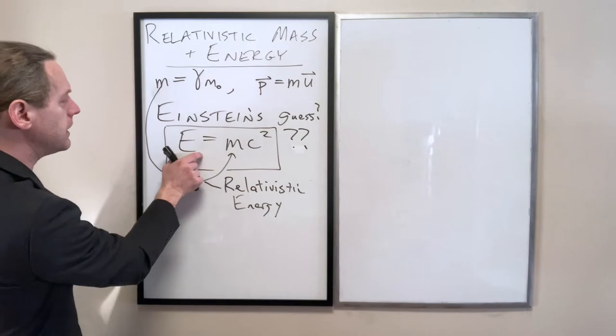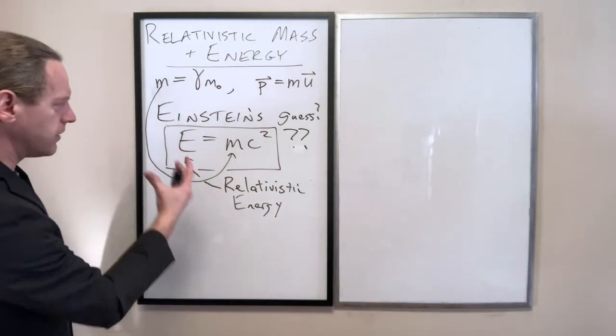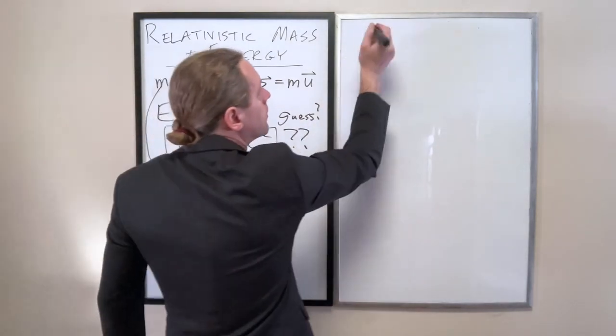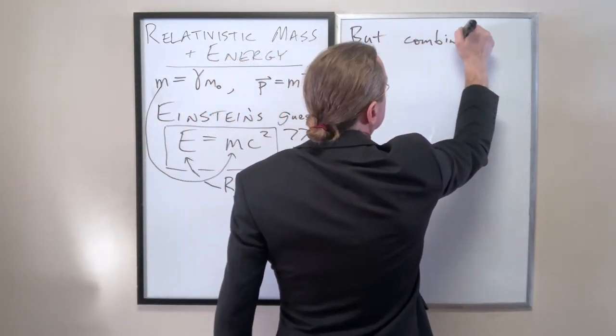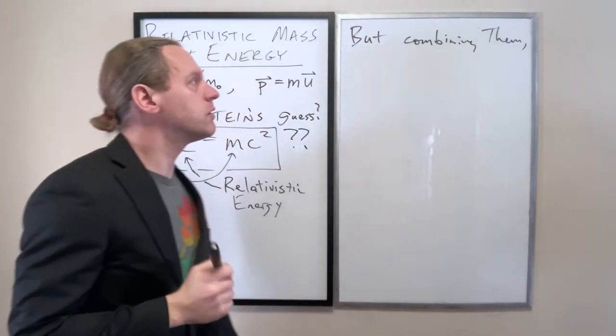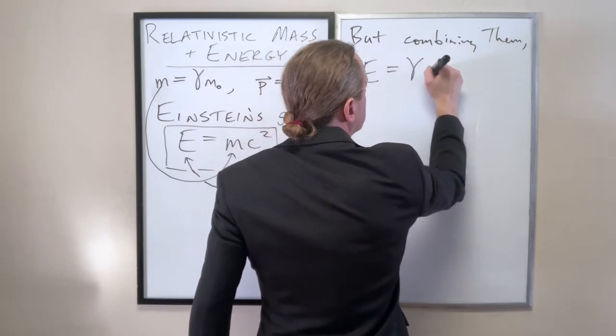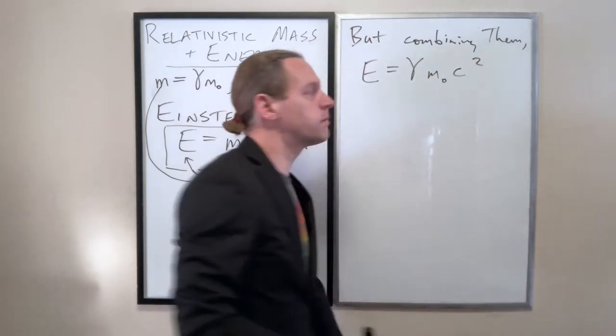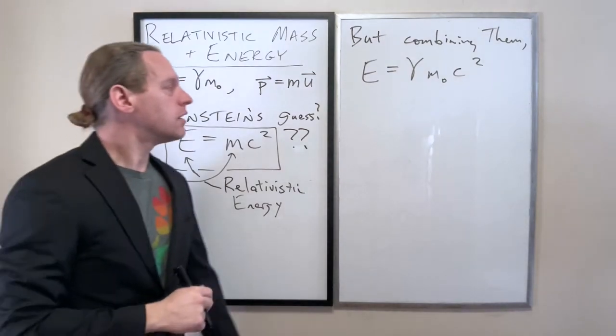And so if we now consider combining these two equations, we get some interesting results here. So if we combine those, we see that E equals gamma M naught C squared.